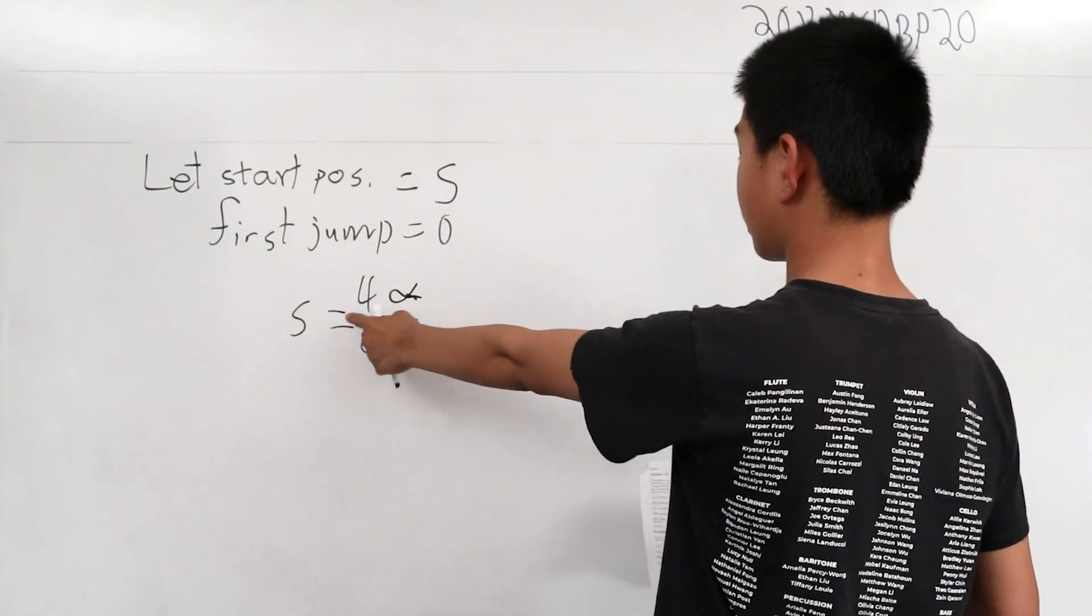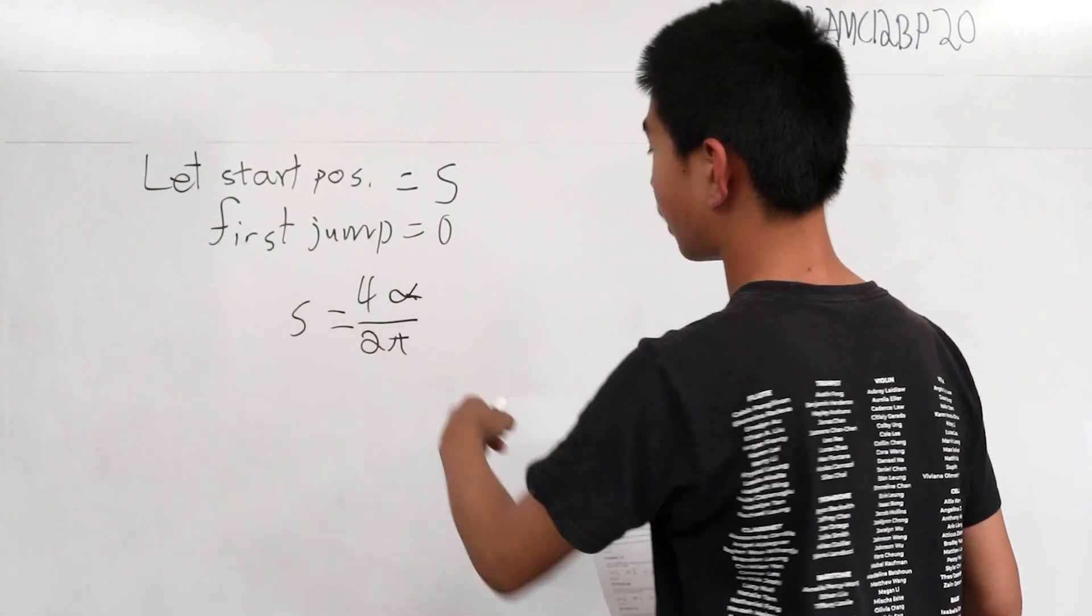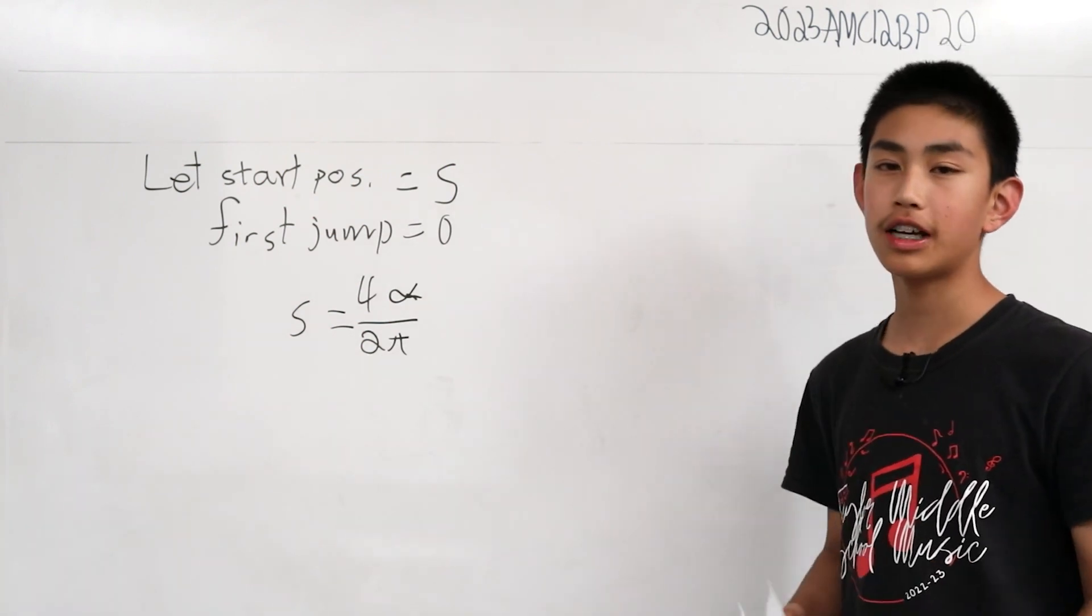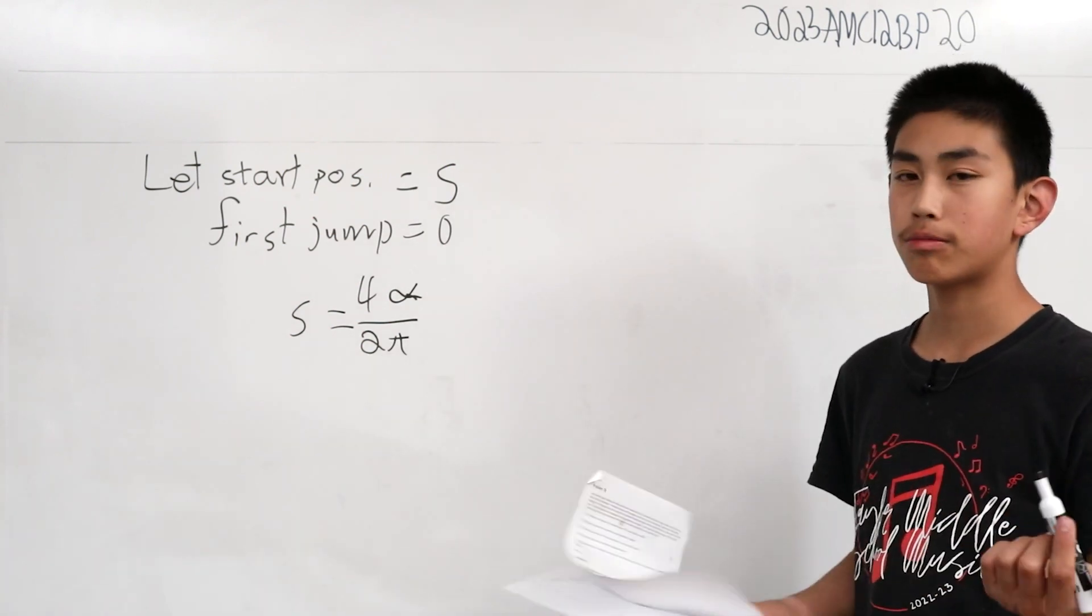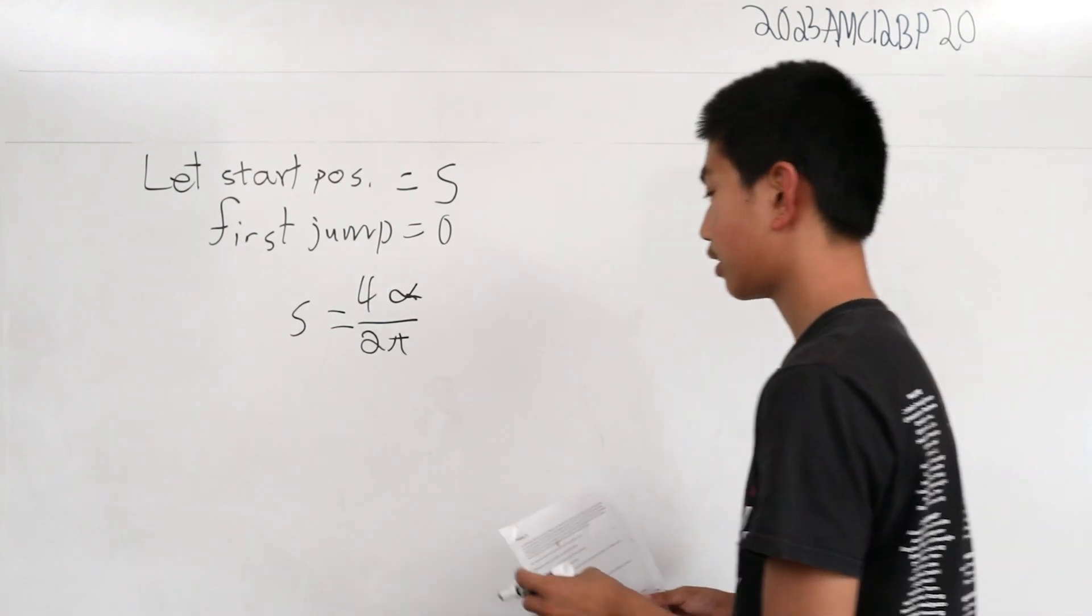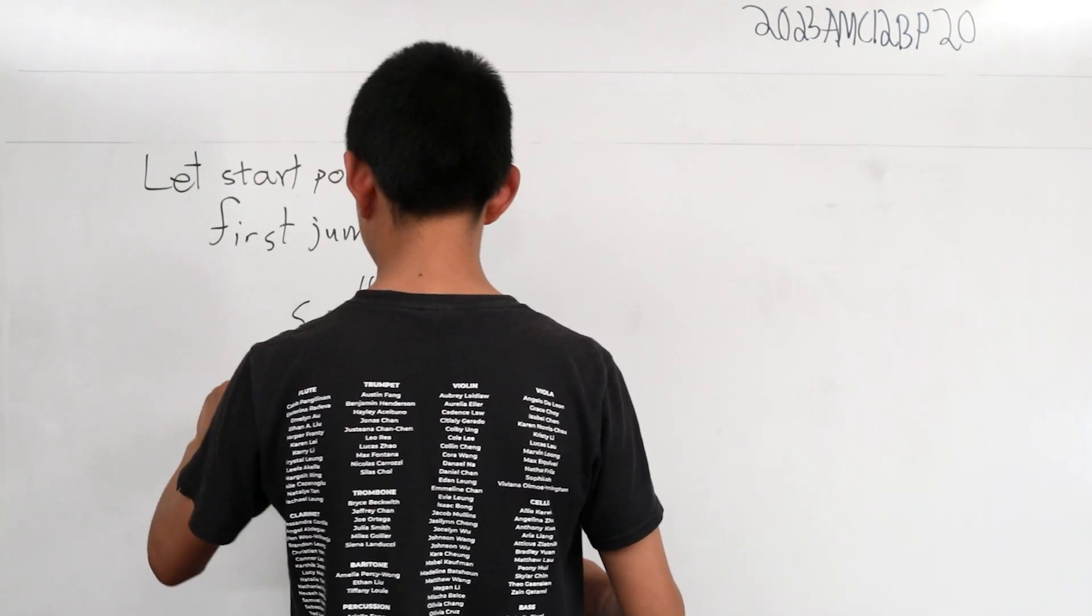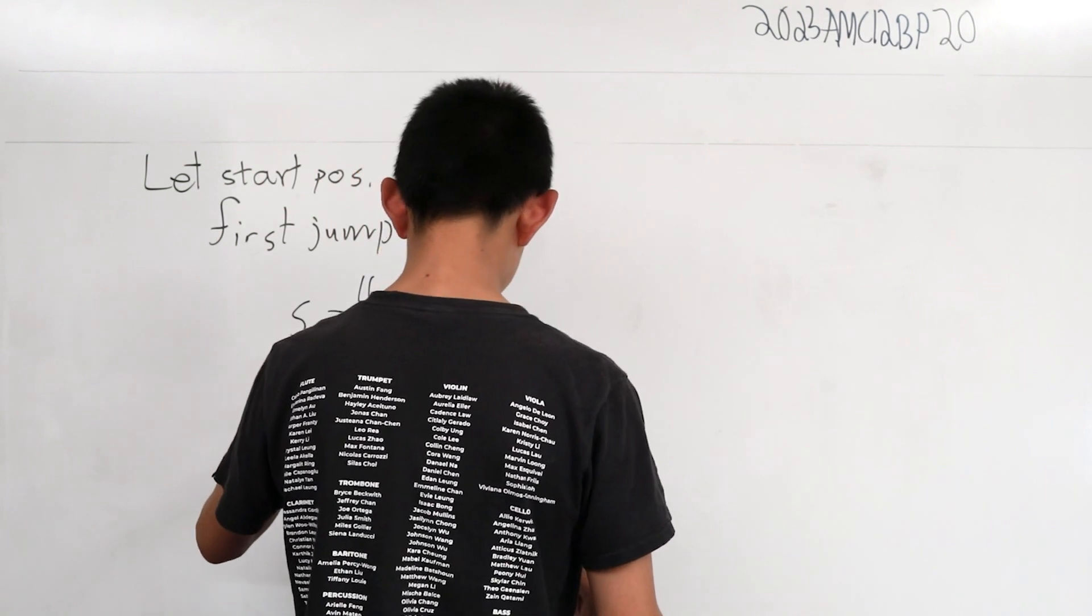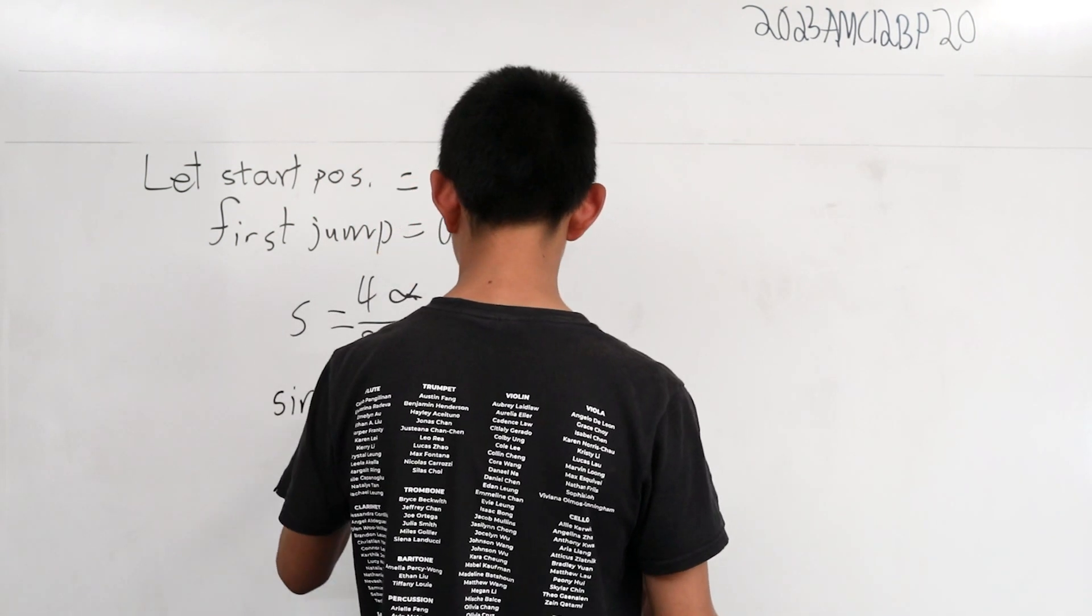So if we have S is equal to four omega over two pi, we can then, by using our graph that we find, we can then sort of use some trigonometric values. So what we can do is, well, we find that sine of omega is equal to one-fourth.